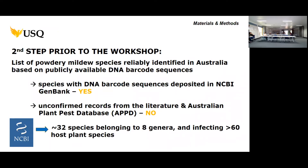Another step before the workshop was to check all the DNA barcodes of powdery mildew species from Australia that are publicly available in NCBI GenBank. Surprisingly, we could only find 32 species representing eight genera that were reliably identified by ITS sequences. We did not use the Australian Plant Pest database because it is not based on molecular identifications and contains many errors — confirmed by everyone. We only used DNA barcodes.